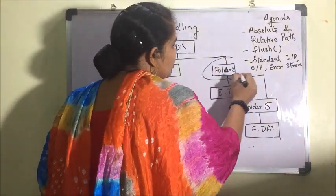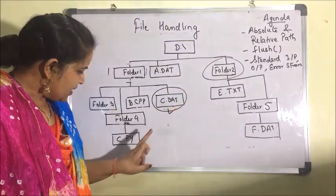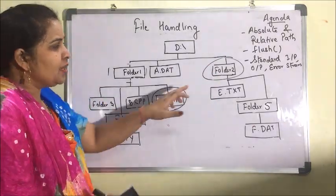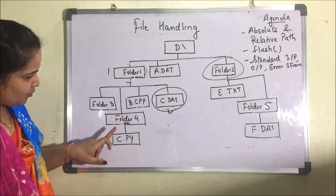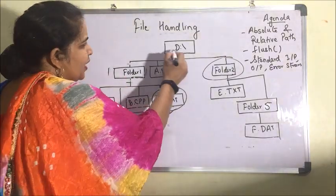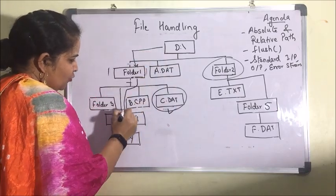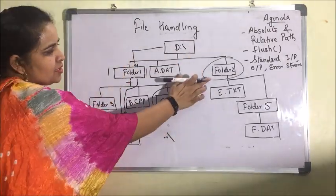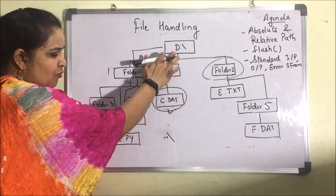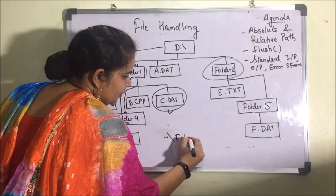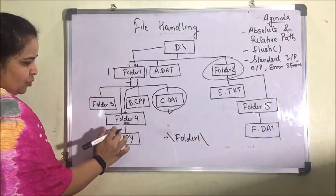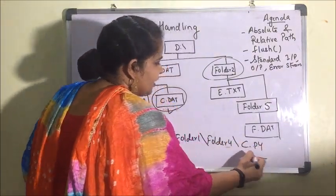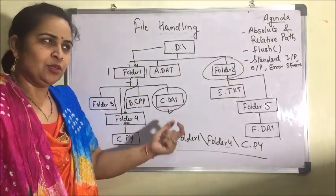Now suppose we are in folder two and I want to access a file in folder four. Folder four is inside folder one. The path will be: double dot — meaning the parent of the current folder — then backslash folder one, backslash folder four, backslash c.py. In this way we can access a file using relative path.